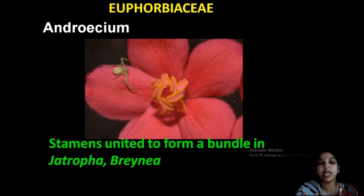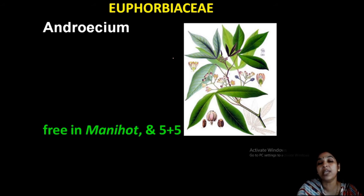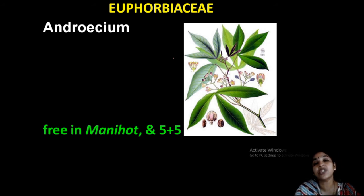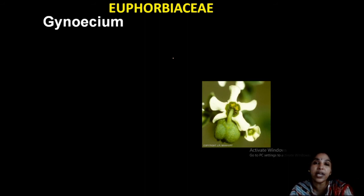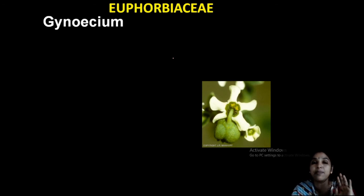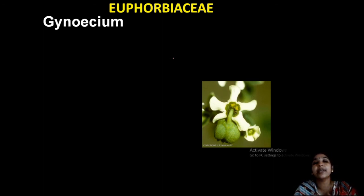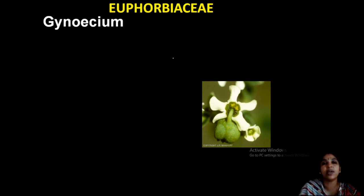The stamen is united to form a bundle in Jatropha and Breynia. Stamens are free in Manihot — kappa — in a five plus five arrangement. So wide variations exist in the stamens. In Euphorbia, the male flower is usually represented by a single stamen; in some others, two whorls of five plus five, or only one whorl.